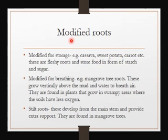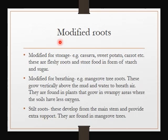The word 'modified' means to change or improve something. In addition to providing anchorage and absorbing water and mineral salts, some roots have been able to do other functions. For example, storage — cassava, sweet potatoes, and carrots are all examples of roots that store food.